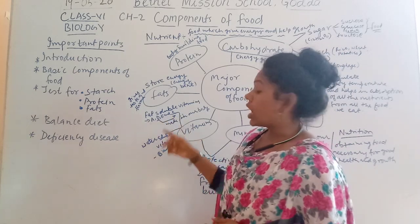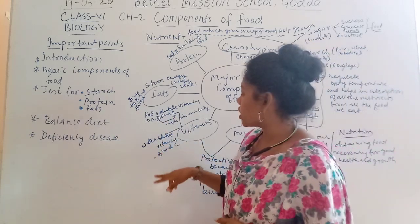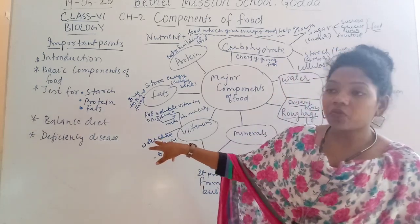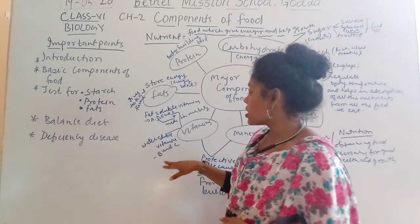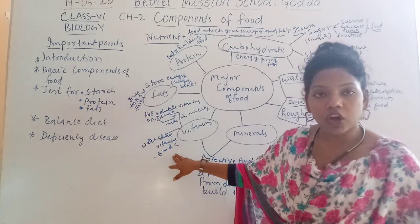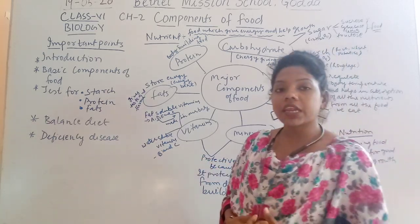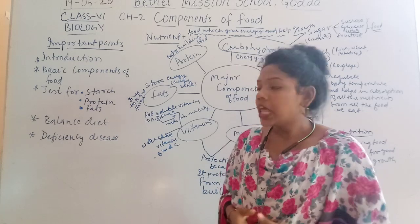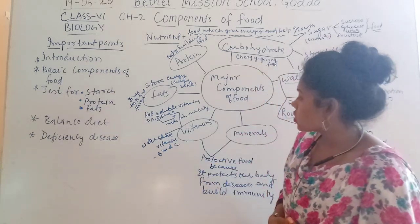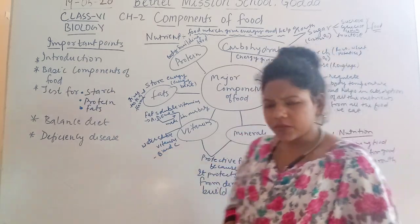Vitamins D, E, and K are fat-soluble vitamins, and water-soluble vitamins are B and C. They are called water-soluble because they can easily dissolve in water, and we can take them in the form of fluid or liquid.